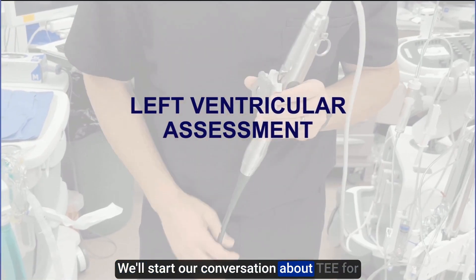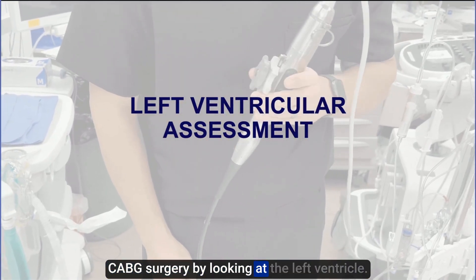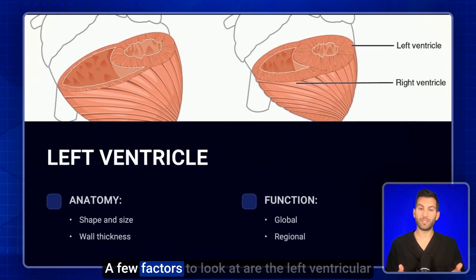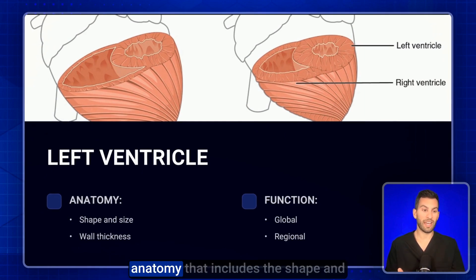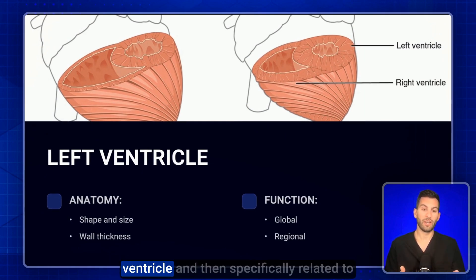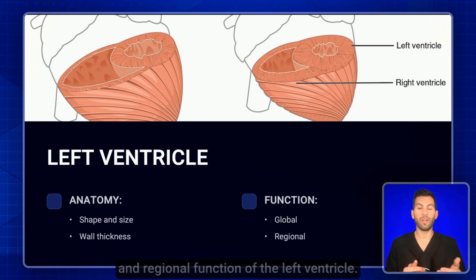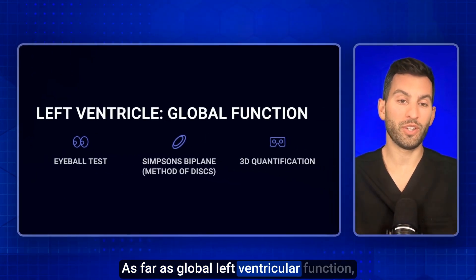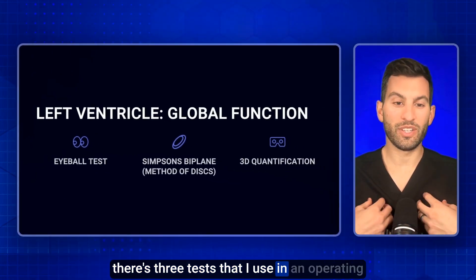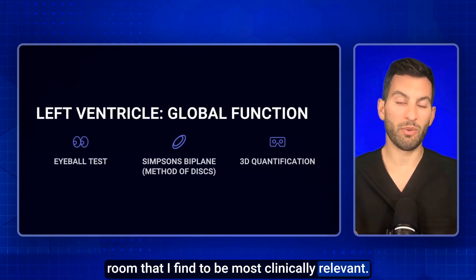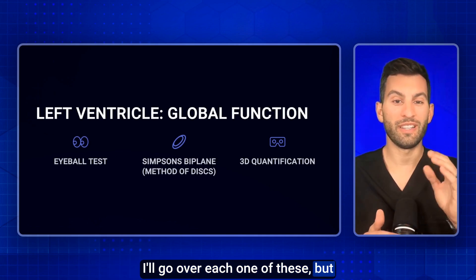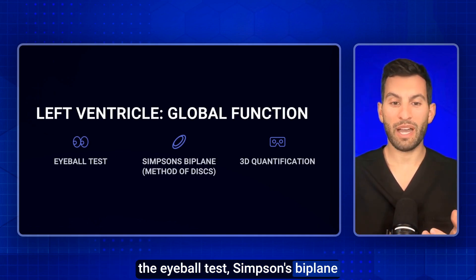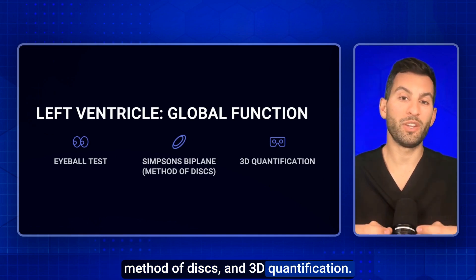We'll start our conversation about TEE for cabbage surgery by looking at the left ventricle. Key factors include the left ventricular anatomy — shape, size, and wall thickness — and both global and regional function. There are three tests I use in the operating room that I find most clinically relevant: the eyeball test, the Simpson's biplane method of discs, and 3D quantification.